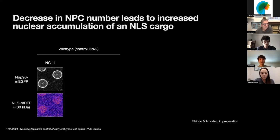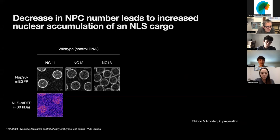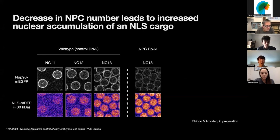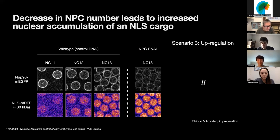To test these different possibilities, I focused on a very simple synthetic cargo, NLS-RFP, which is basically a monomeric RFP with a short NLS nuclear localization signal. NPC number decreased with developmental progression, but very interestingly, we found that NLS-RFP levels in the nucleus increased during this period. And more strikingly, when I partially depleted NPCs using RNAi, we had even more accumulation of NLS-RFP in the nucleus. So a reduction in NPC number can lead to up-regulation of NLS-RFP import — quite counter-intuitive.